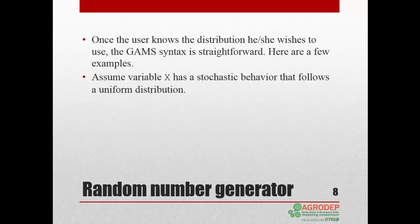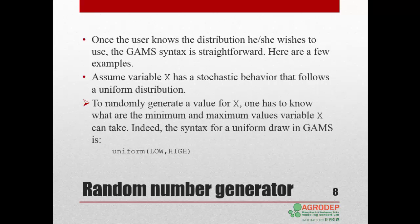Assume that variable X displays a stochastic behavior that follows a uniform distribution. To generate random values of X following a uniform distribution, the user must specify as arguments the minimum and maximum values that variable X can take. So the following syntax applies: first, the keyword uniform, followed by the minimum and maximum values in parentheses.